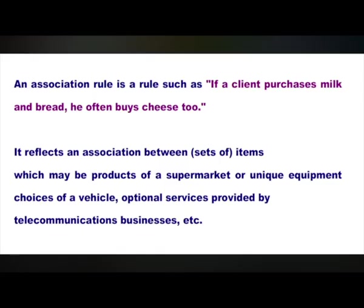Such information, expressed in the form of rules, can often be used to increase the number of items sold — for example, by arranging the products in a supermarket appropriately, placing them adjacent to each other to invite more clients to purchase together, or to immediately suggest products that may be of concern to the client. An association rule is a rule such as: if a client purchases milk and bread, he often buys cheese. It reflects an association between items, which may be products of a supermarket, unique equipment choices of a vehicle, or optional services provided by a telecommunication business.